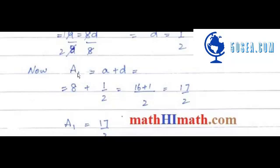Capital A1 is the second term. In the second term you find the first term plus one time the difference: 8 plus 1/2. Taking LCM of 2, this becomes 16 plus 1 over 2, which equals 17/2.